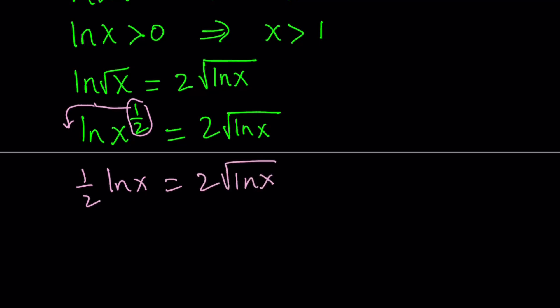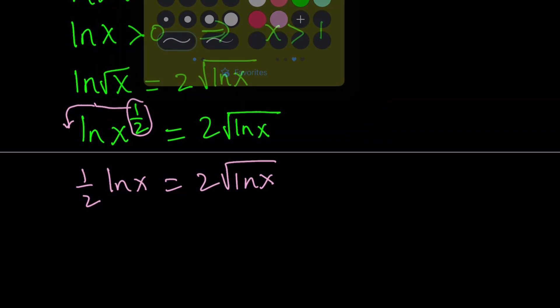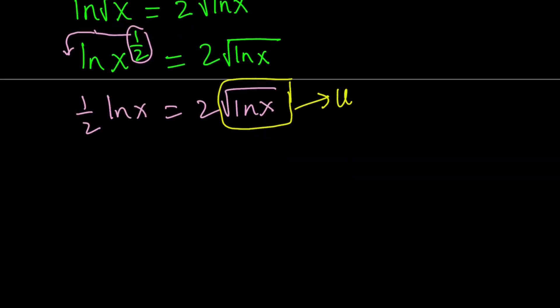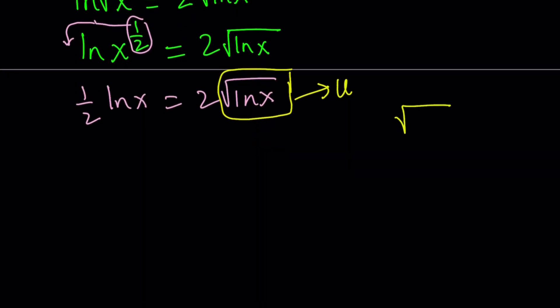Now at this point, it makes sense if we use substitution, right? Let's go ahead and call this something. How about u? Then we get the following. If square root of ln x is equal to u, then ln x is equal to u squared. Awesome.